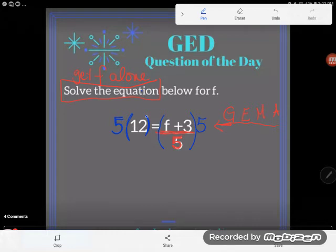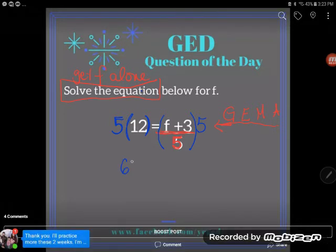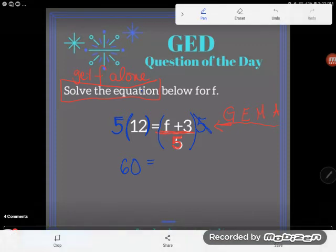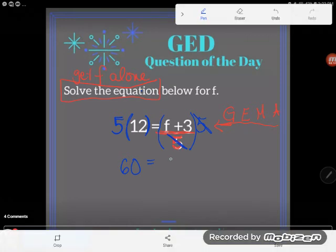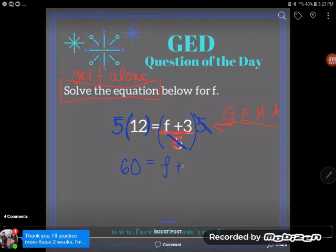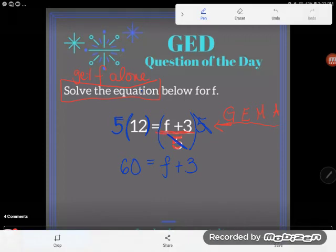On the left-hand side, 5 times 12 is math I can do. 5 times 12 is 60. On the right-hand side, multiplying the entire side by 5 is the opposite of dividing the entire side by 5. Opposites cancel out and so all I'm left with is f plus 3. And now this problem doesn't look half so nasty as it did before.